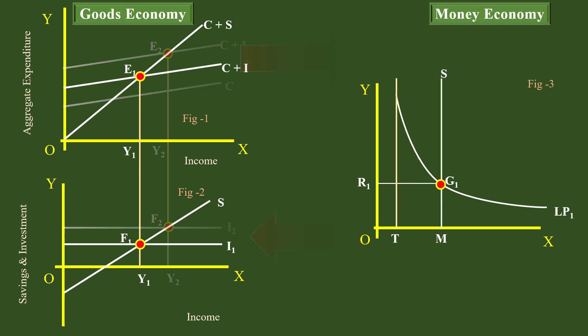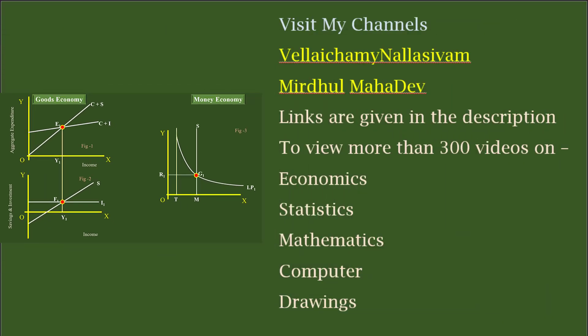Look at this graph. Figure 1 and Figure 2 illustrate goods economy equilibrium. Figure 3 illustrates the money economy equilibrium. Equilibrium income determination and equilibrium interest determination have already been discussed. Visit my channel — link is given in the description.